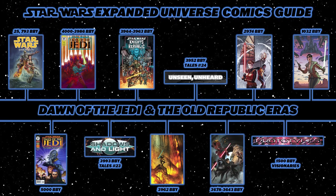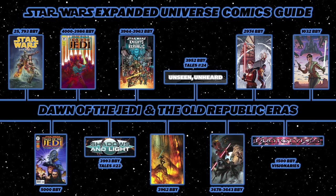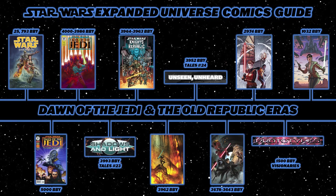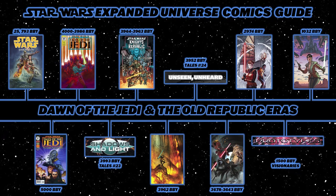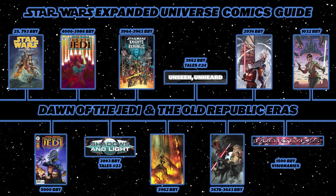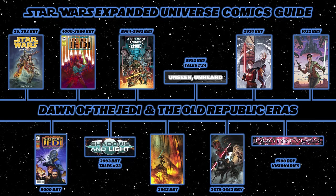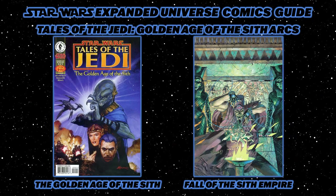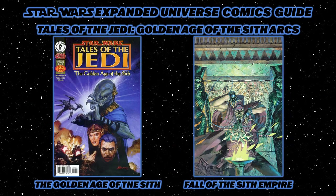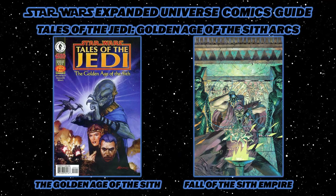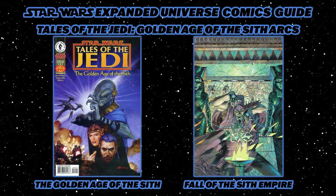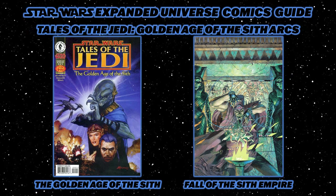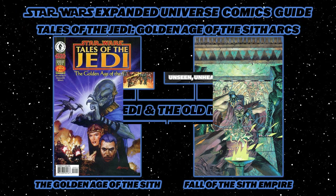The Old Republic timeline begins in comics with Tales of the Jedi, which takes place in two different parts. First, you begin in 5,000 BBY during the Golden Age of the Sith. You would read The Golden Age of the Sith — a zero issue and five other issues — then move on to The Fall of the Sith Empire as a sequel story.